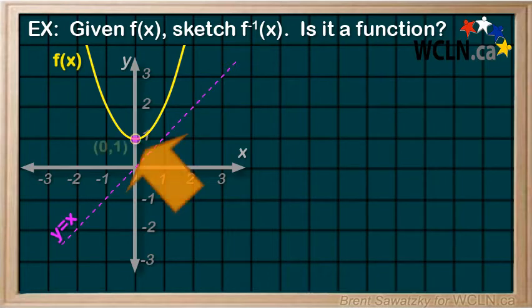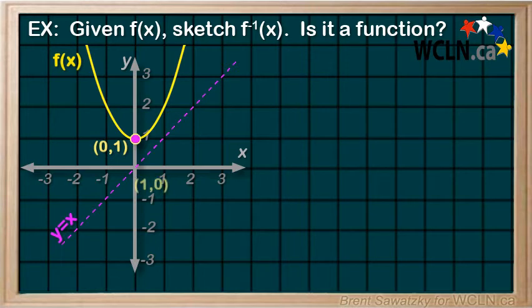So this point here, (0,1), becomes—well, we remember that we switch the x and the y in an inverse. So we have (1,0), and we can plot it here.